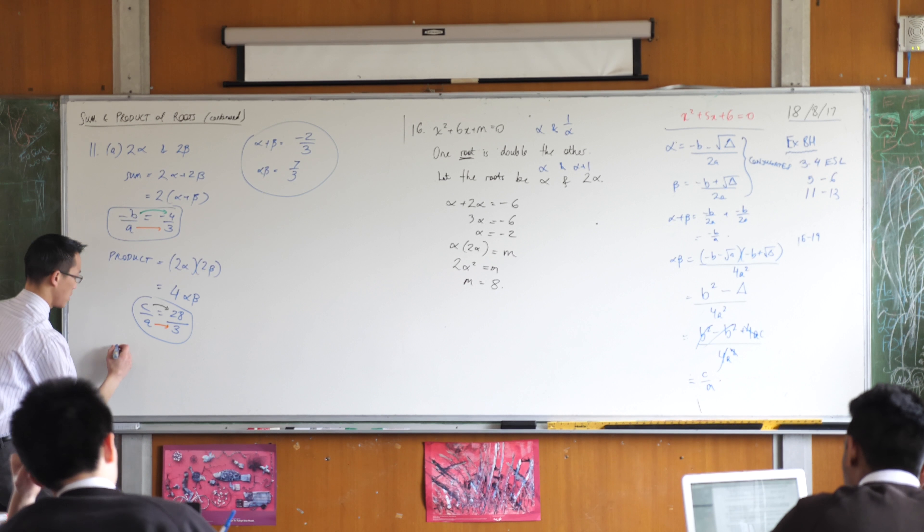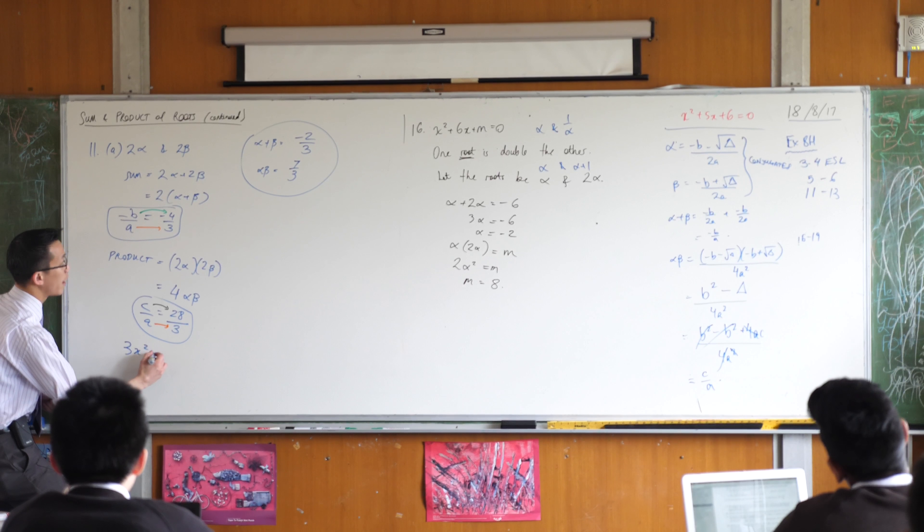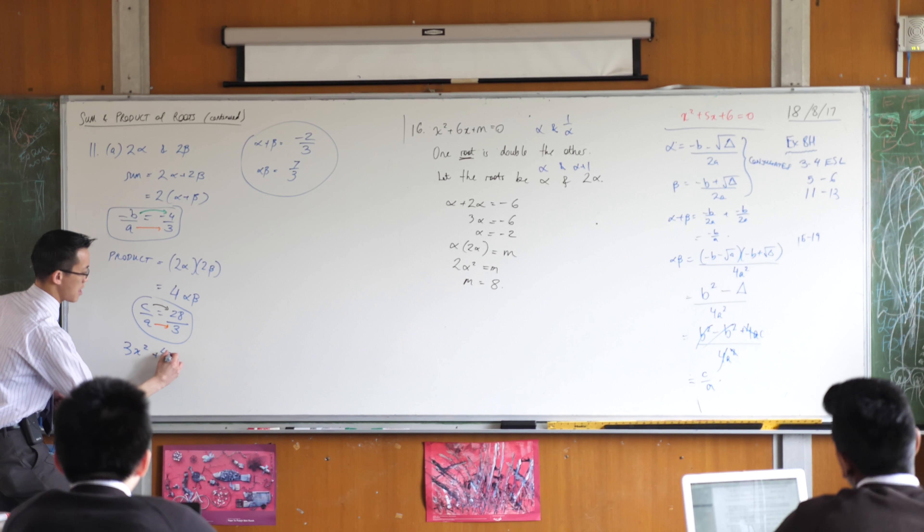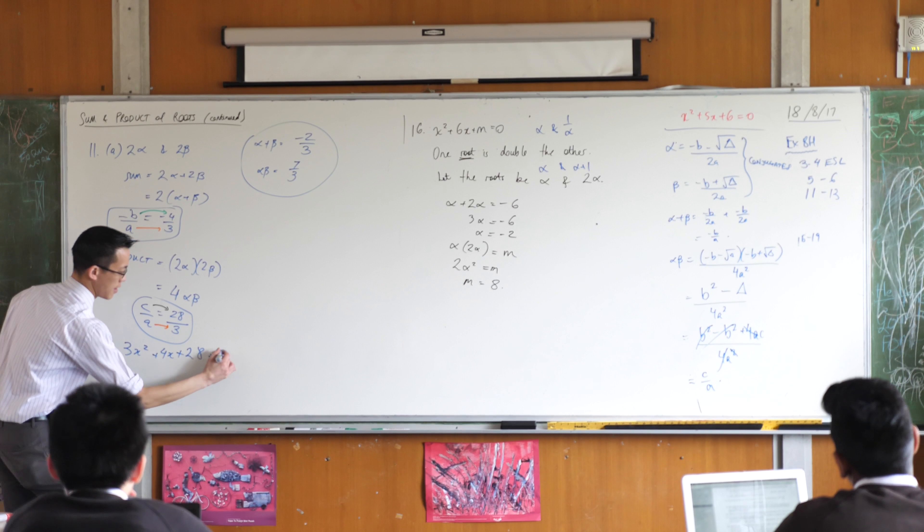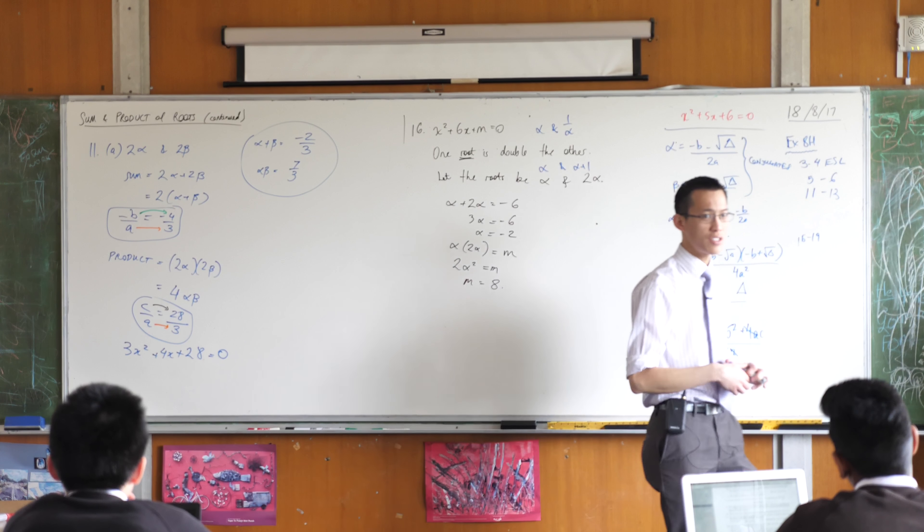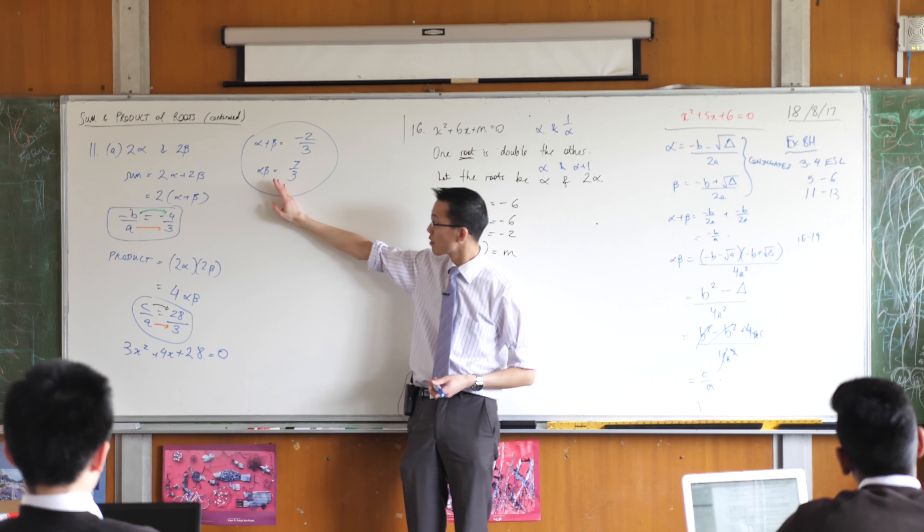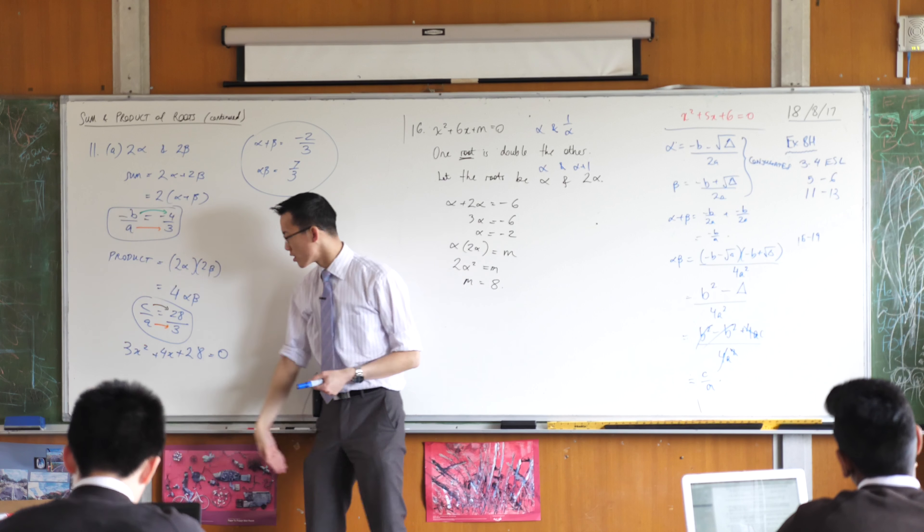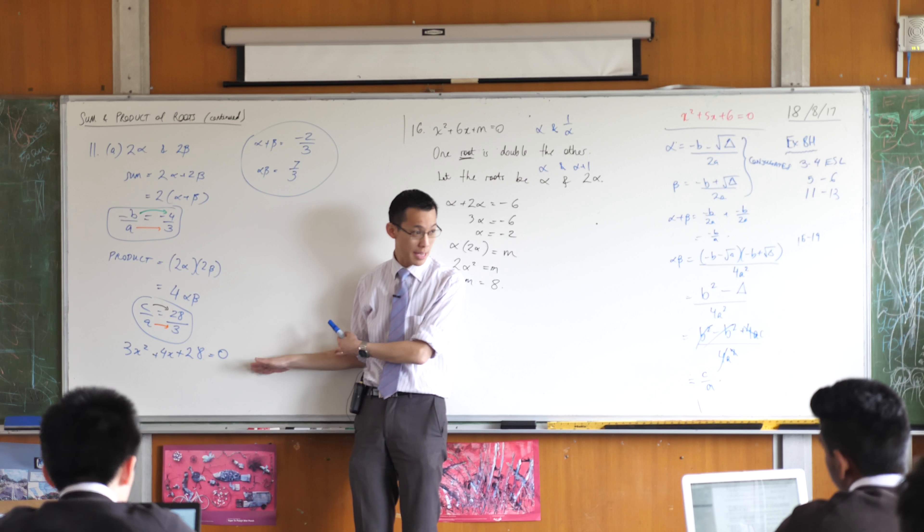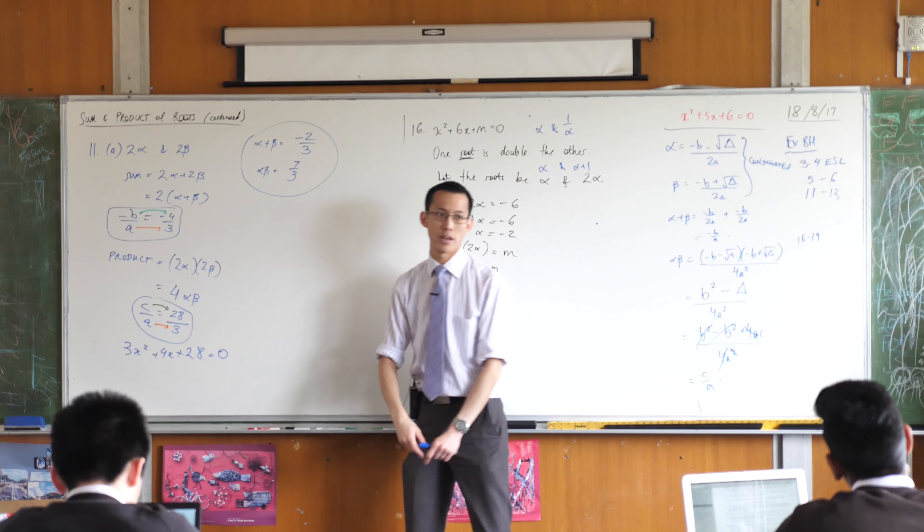there's ax squared plus bx plus c. This is my new quadratic. Are you happy with that? Do you see how I used the knowledge from the original quadratic and then probably forgot about it because I was making a new quadratic? Does that make sense? I just took the pieces that I needed and left behind the rest. Here's my new quadratic.